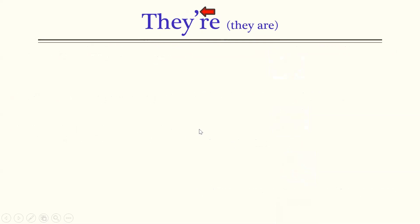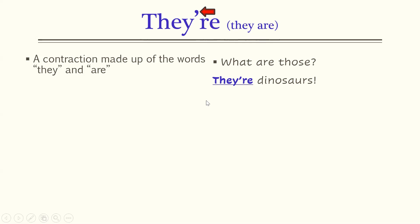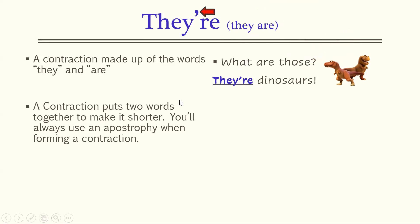The other form of the word there is spelled T-H-E-Y apostrophe R-E. This is a contraction made up of the words they and are. If somebody said 'what are those?' you could answer 'they're dinosaurs.' A contraction puts two words together to make it shorter. You'll always use an apostrophe when forming a contraction. The apostrophe is always in the position where it takes the place of the letters that are gone after you push these two words together.